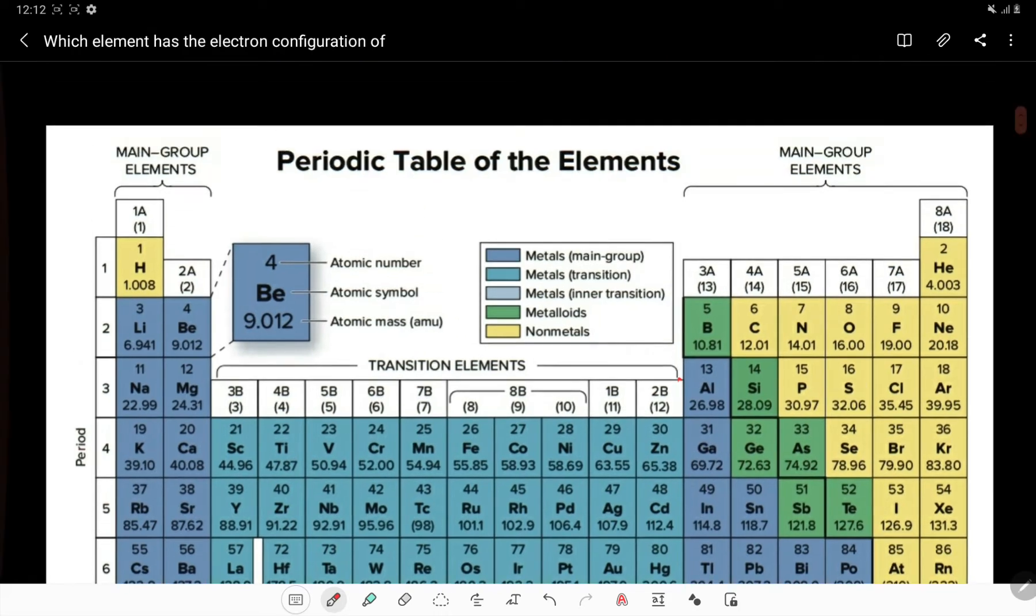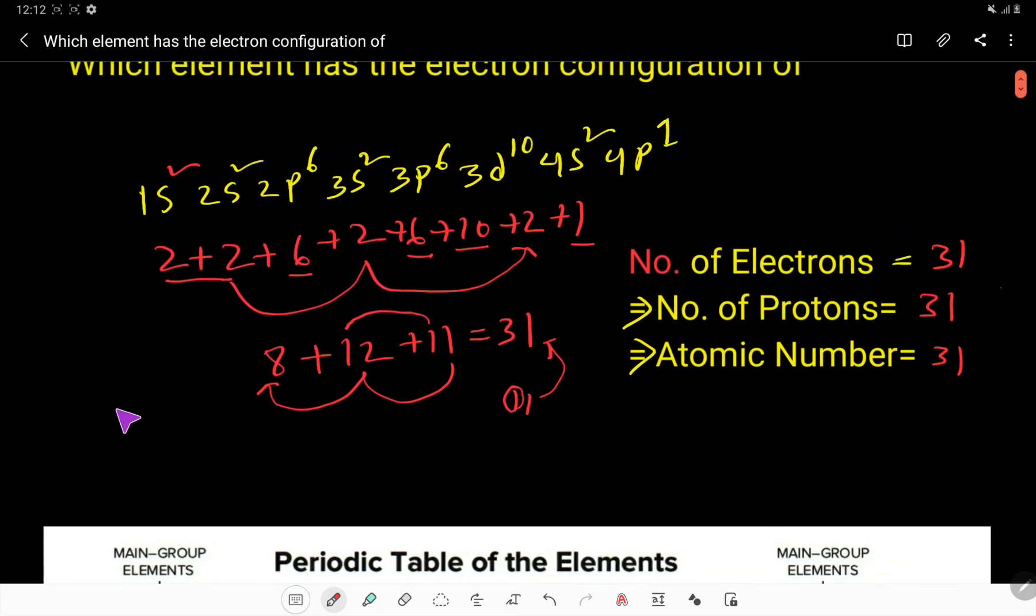So gallium, its atomic number is 31, its number of electrons here is 31, number of protons 31, and its electronic configuration is this.